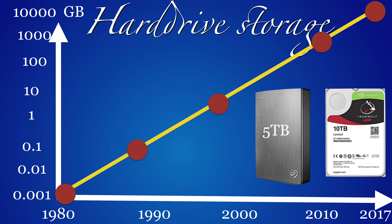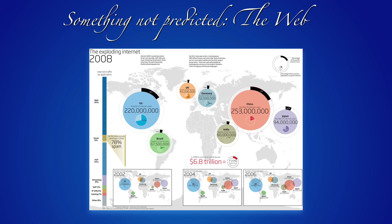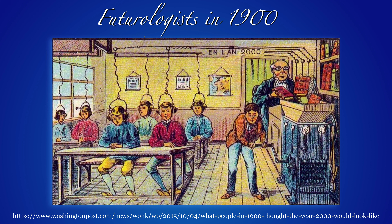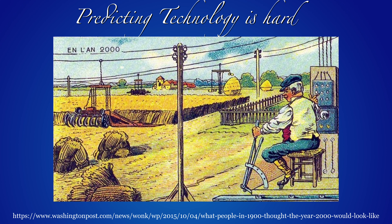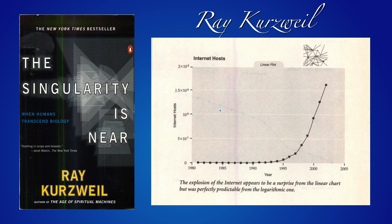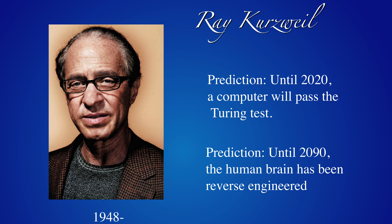Just last week I got a 5TB drive for backup for 140 dollars; you can already buy 10TB desktop drives. But it's difficult to predict the future. The web grew exponentially but was not predicted by futurologists. A hundred years ago people predicted a very different future. Ray Kurzweil is one of those computer futurologists who warned about the singularity — he predicted that computers would pass the Turing test by 2020, or that in 2019 the human brain would be reverse-engineered. But it might all come out differently.